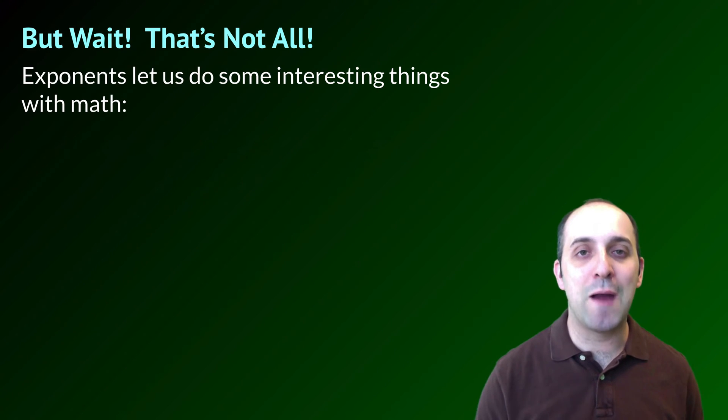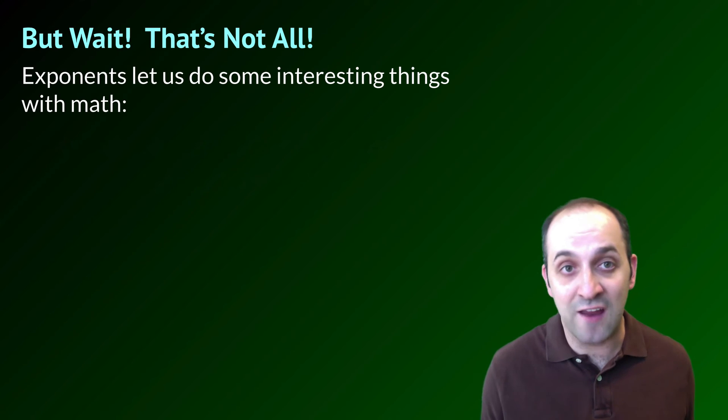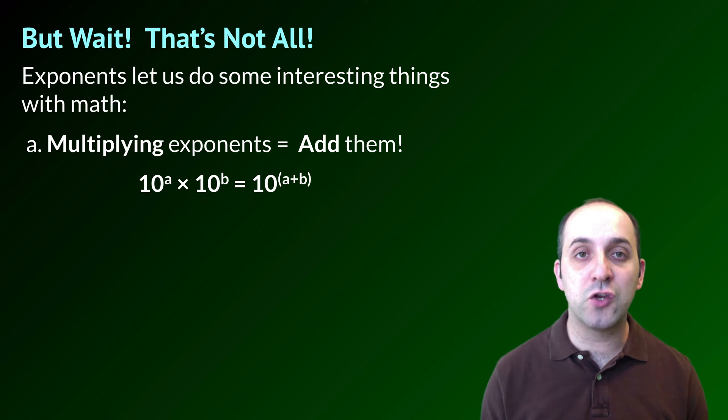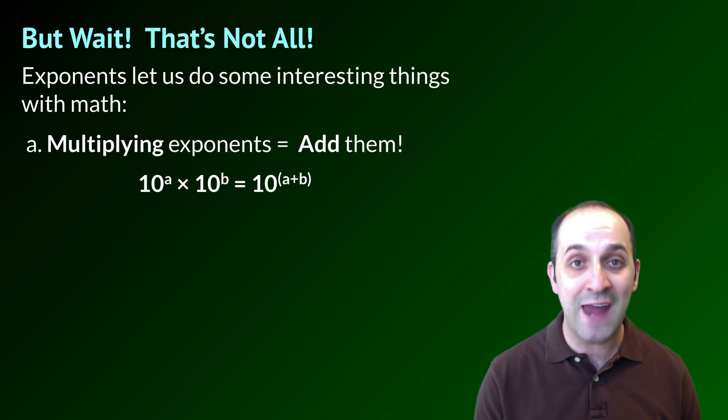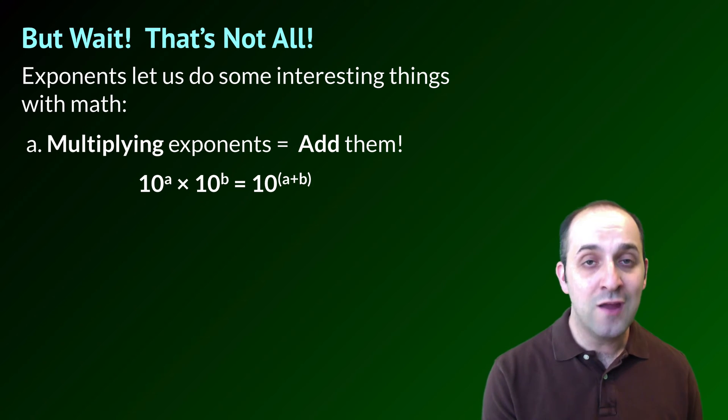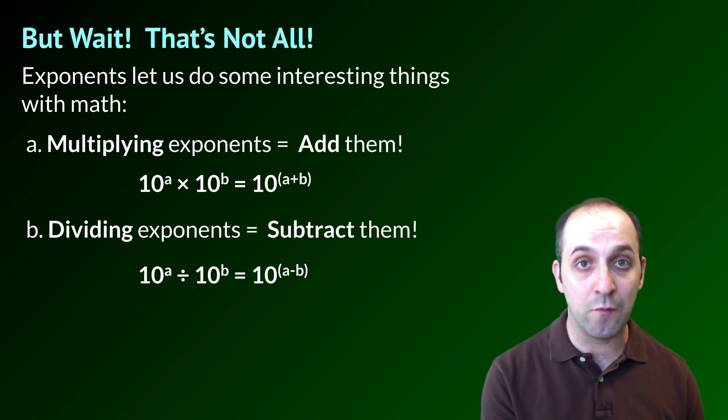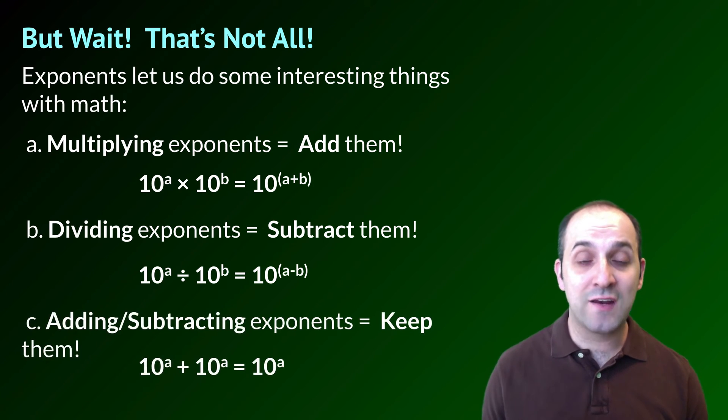One of the nice things about working with exponents with common bases, in this case base 10, is that we can do interesting things with the exponents. When we multiply two exponents that have a common base, we actually just wind up adding them together to get the product of that multiplication. You can see this written algebraically here. 10 to the a times 10 to the b is going to be equal to 10 to the power of a plus b. And when we divide common base exponents, we're going to wind up subtracting them from each other. You can see that written right here. When we add or subtract common base exponents with the same exponent, that exponent does not change. So 10 to the a plus 10 to the a is going to wind up as 10 to the a.